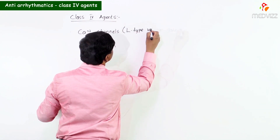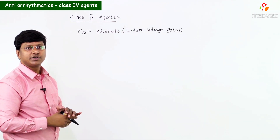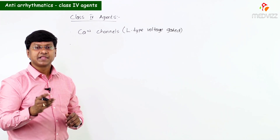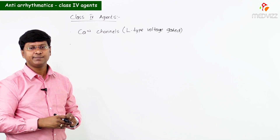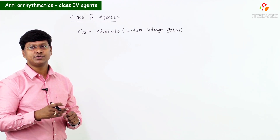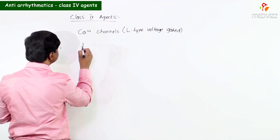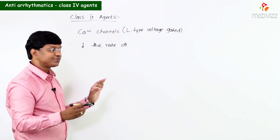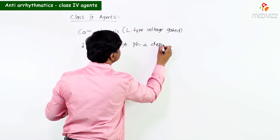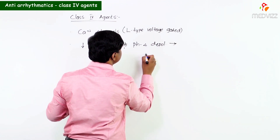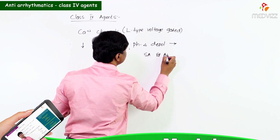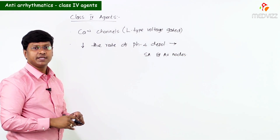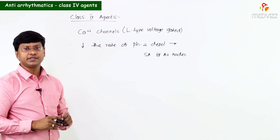These Class 4 agents, being blockers of L-type voltage-gated calcium channels, decrease the rate of phase 4 depolarization in the SA node and the AV node.